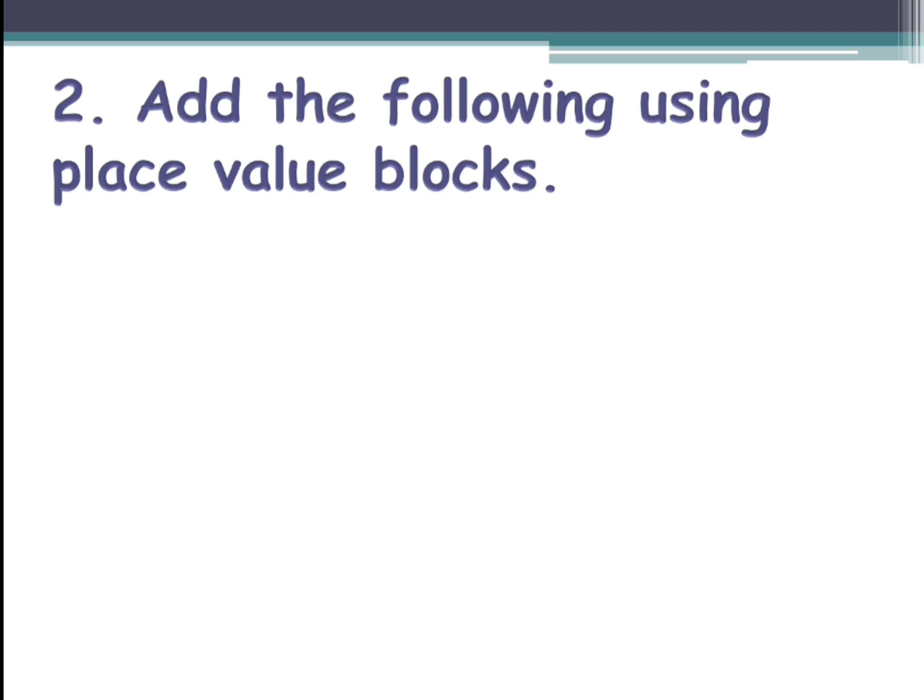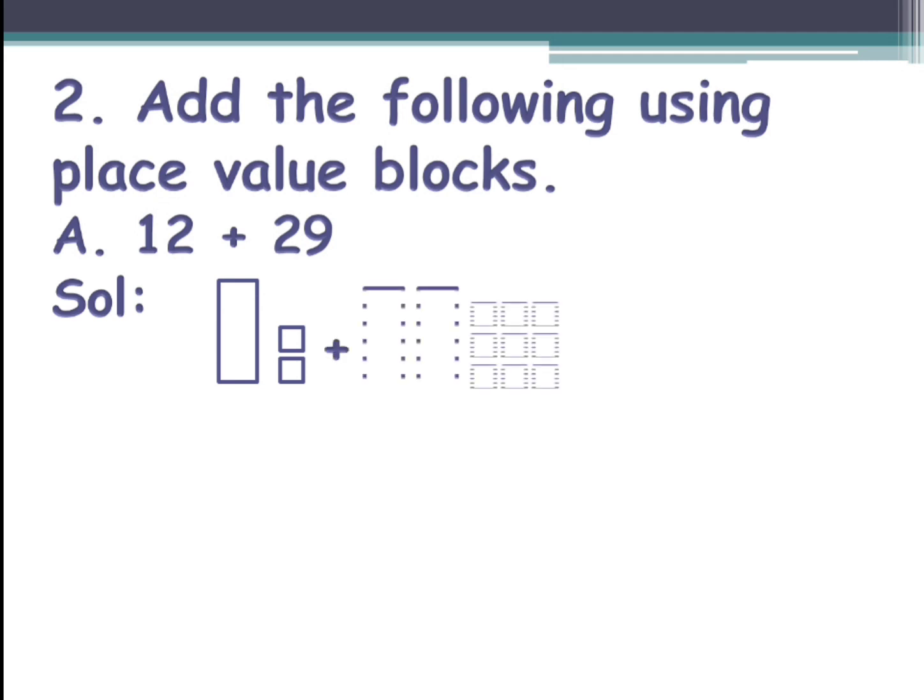So 12 plus 29. 12 means one rectangle which represents one ten and two small squares which gives us two ones, 12. And for 29, two rectangles which becomes 10 plus 10, 20 - 2 means 20 - and 9 small squares. You will draw plus and draw 29 because we are doing addition.